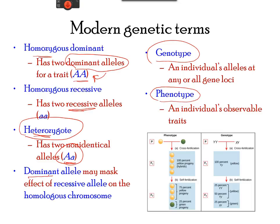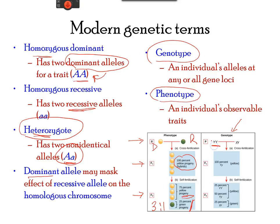Let's see the phenotype expression of these alleles in this chart. The P generation shows a yellow seed plant crossed with a green seed plant. In the F1 generation, 100% yellow offspring indicates that yellow seed color is dominant. Capital Y, capital Y is the genotype of the yellow seed color.